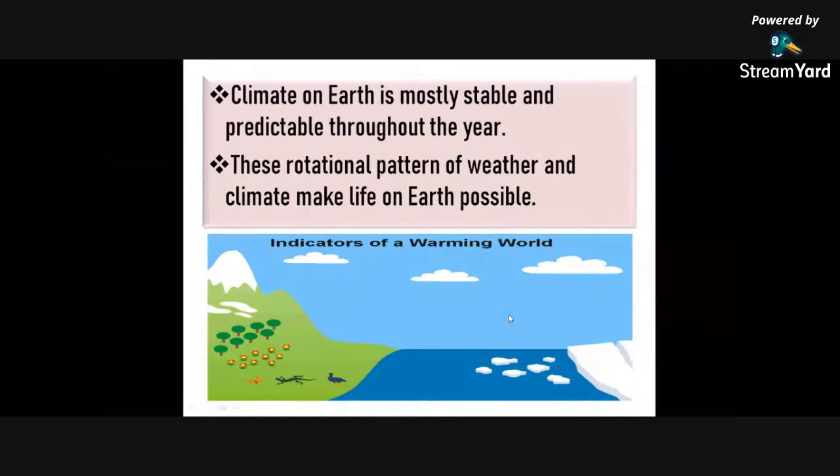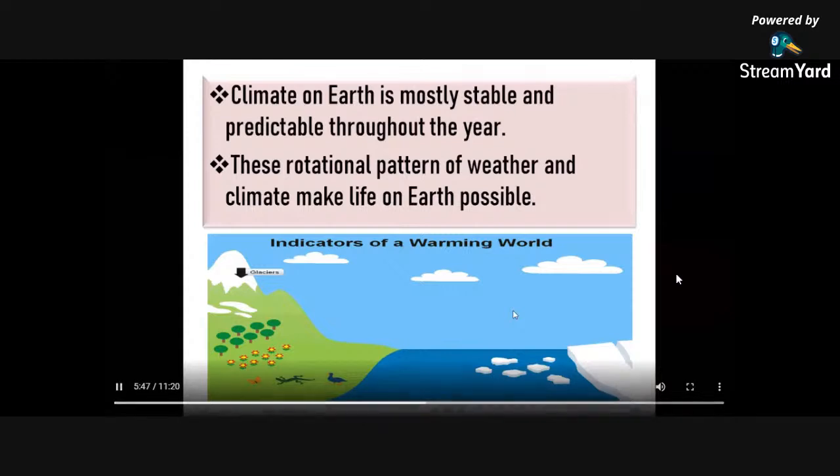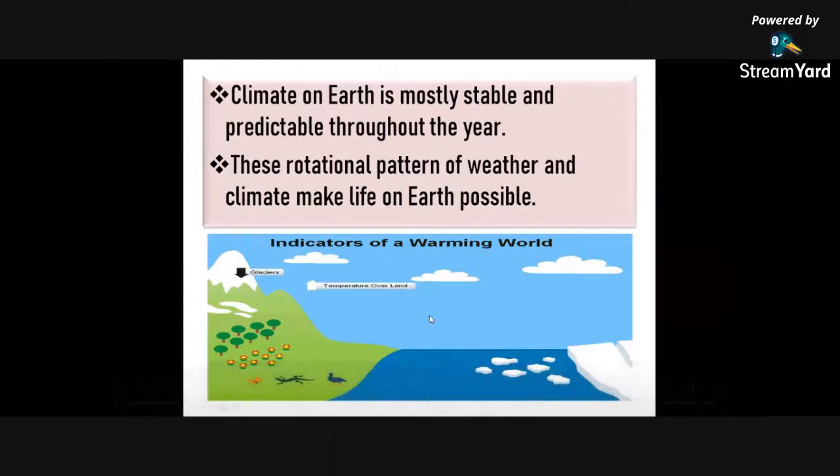Climate on Earth is mostly stable and predictable throughout the year. This rotational pattern of weather and climate makes life on Earth possible. But what happened here? We're going to look at the picture.